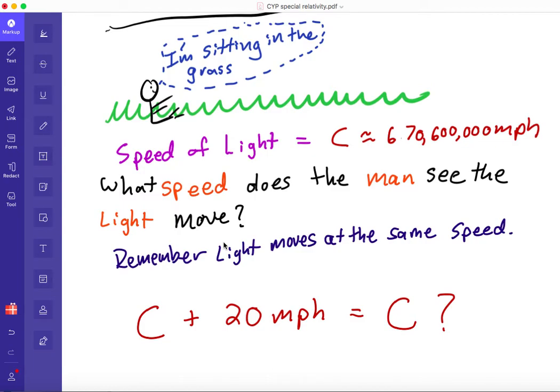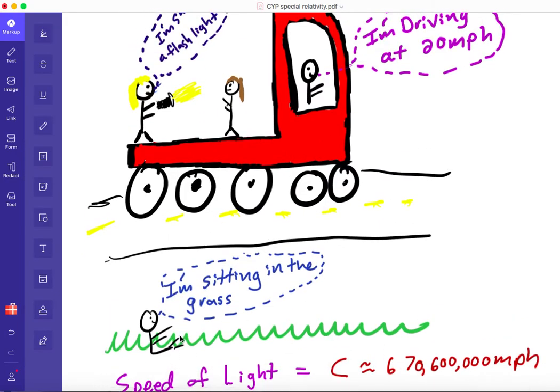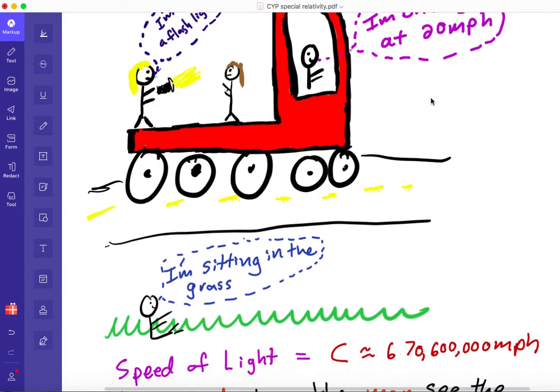So based on what we did on the page before this, we have the speed of light plus 20 miles per hour equals the speed of light. Does this make sense? Remember I said that the ball gets the motion from the car and from the girl throwing it. So if the girl shoots a flashlight and the light moves at the speed of C, then how does it make sense that this guy also sees the light moving at the speed of C when it should also get motion from here?